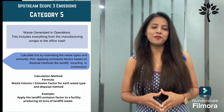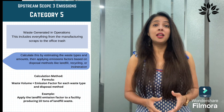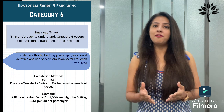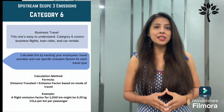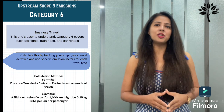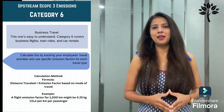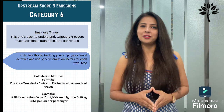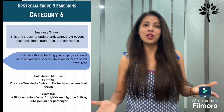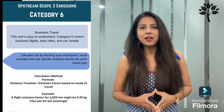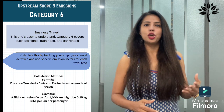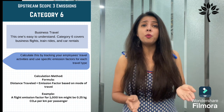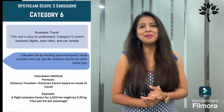Category 6 is business travel — covering business flights, train rides, and car rentals. To calculate this, track employee travel activities and use specific emission factors for each travel type. The calculation method is: distance traveled × emission factor based on mode of travel. Activity data is distance and mode of travel — air, car, or train. For example, a flight emission factor for 1,000 km might be 0.2 kg CO₂e per kilometer per passenger.